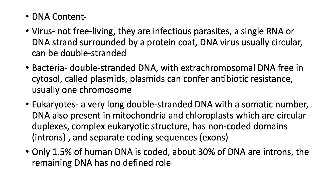Eukaryotes have very long double-stranded DNA with a somatic number. DNA is also present in mitochondria and chloroplasts, which are circular duplexes. This is a complex eukaryotic structure. There are non-coded domains called introns, and separate sequences which are coded — these are exons. Only 1.5% of human DNA is coded. About 30% of DNA are introns, and the remaining DNA has no defined role.